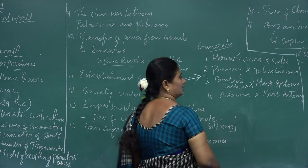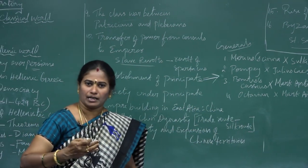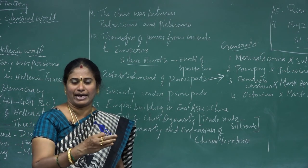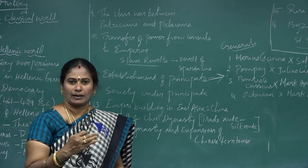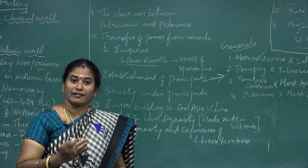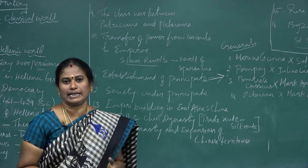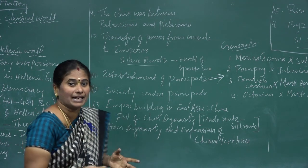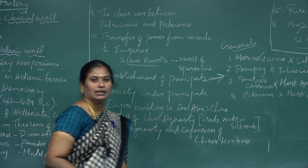Octavian - now called Augustus - was established as a de facto monarch and reestablished cultural and political stability. The period starting from Augustus is known as the period of the Principate. Augustus called himself Imperator, which means Emperor.